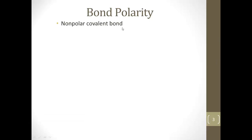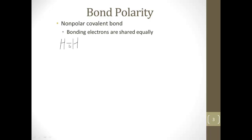A non-polar covalent bond is a bond where the electrons are shared equally. For example, when we have H2 — hydrogen to hydrogen — neither one is more electronegative than the other, so they share equally. The electrons spend as much time around one hydrogen as the other. Same thing with O2 — these electrons spend as much time with one oxygen as the other.